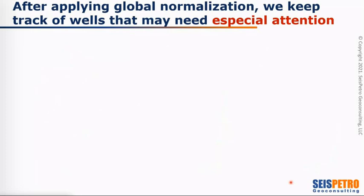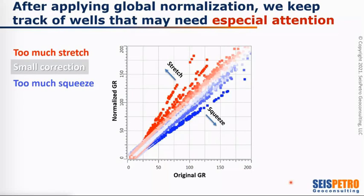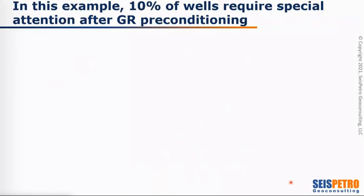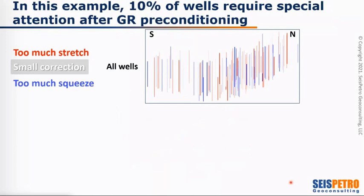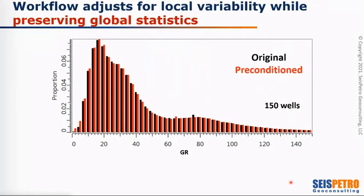After applying the global normalization, we keep track of the changes that may need special attention. We have a cross plot of the normalized gamma ray versus the original gamma ray, and we can identify easily — because we're keeping all these QC parameters — which wells have received too much stretch or too much squeeze, and which had only small corrections. We can also plot the wells with the rescaling factor, so we can identify which wells had too much stretch or squeeze and give them extra attention. Sometimes this kind of preconditioning is required, sometimes it's not, and those wells are set aside.